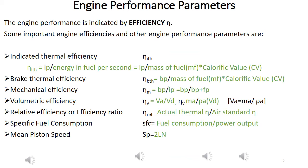Some of the important engine efficiency. Indicated thermal efficiency. It is the ratio of indicated power to heat supply, that is indicated power divided by mass of fuel into its calorific value. Similarly, brake thermal efficiency is given by BP divided by mass of fuel into its calorific value. Mechanical efficiency BP by IP. That is brake power divided by indicated power.